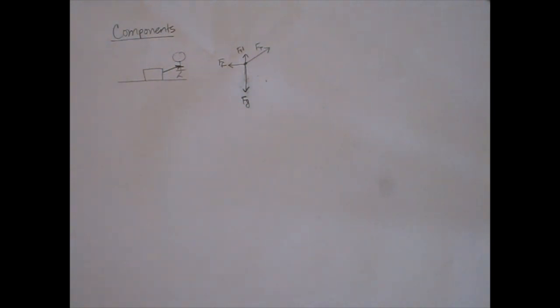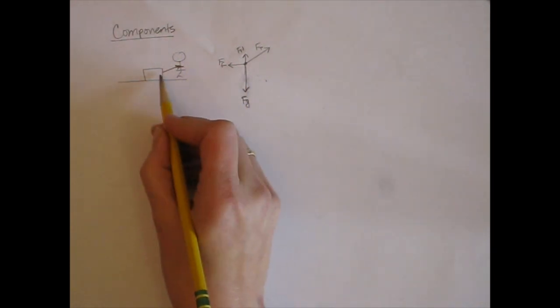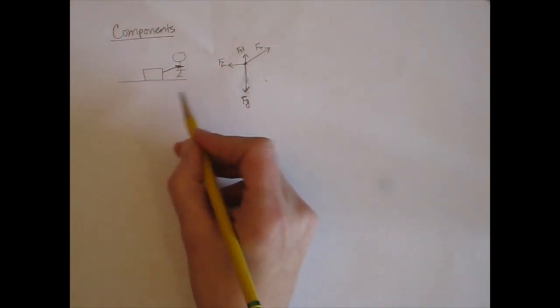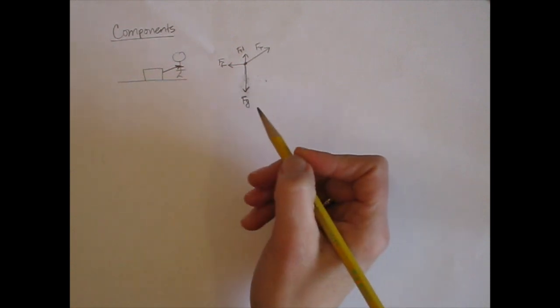The second step when working with forces is to always set up a coordinate system. So you need to decide what orientation your x-y axes are going to have. So the object is moving to the right and at this point we don't know if it's constant velocity or acceleration.